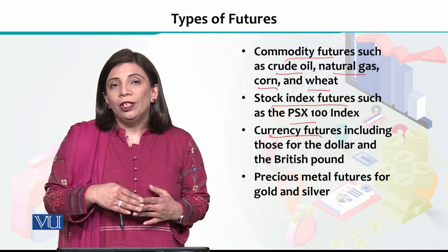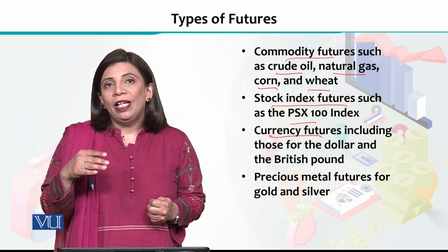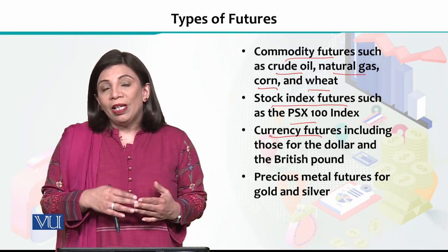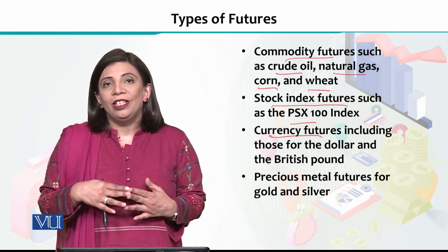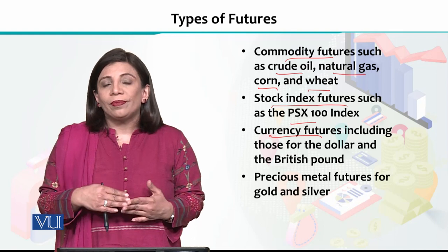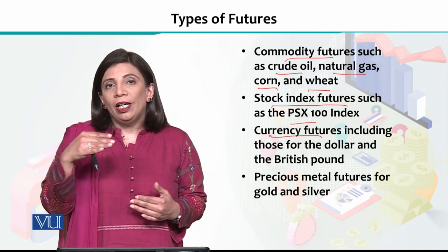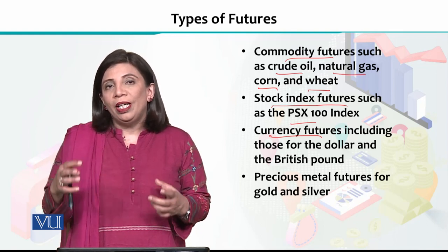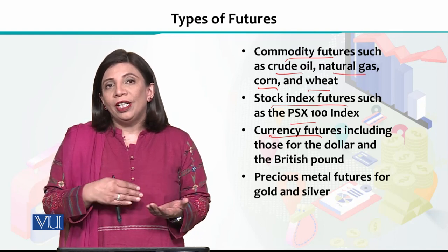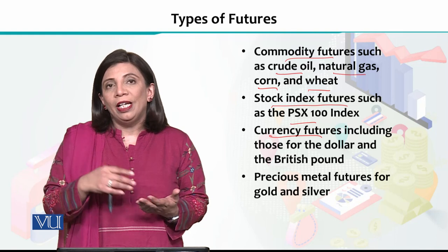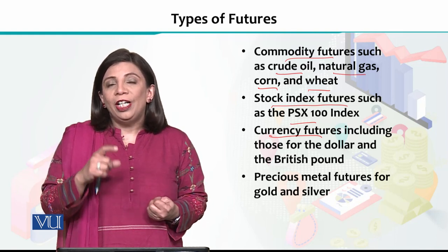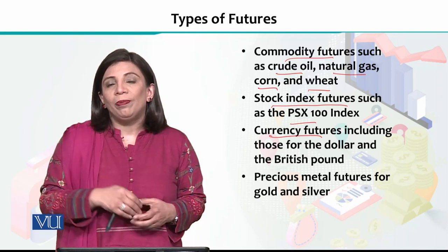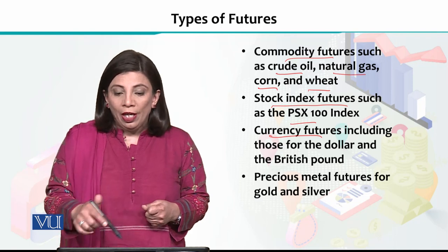Beyond stocks and commodities, there is a third option: currency futures. We all know there are constant fluctuations in exchange rates. So if you want to hedge yourself against an unfavorable exchange rate, you can invest in currency futures for 3 months, 6 months, 1 year, or 2 years — locking in a pre-determined rate at which the dollar will be purchased from you after that period.